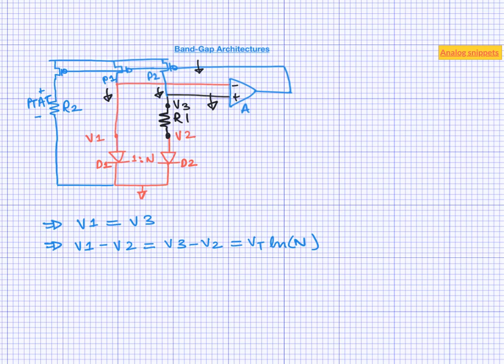For our second objective — adding PTAT and CTAT voltages — recall that we can add two voltages simply by placing them on top of each other. Our CTAT voltage is simply the voltage across a diode, so if we add a diode in this branch it should do the job. And finally, here we are: our bandgap reference voltage.